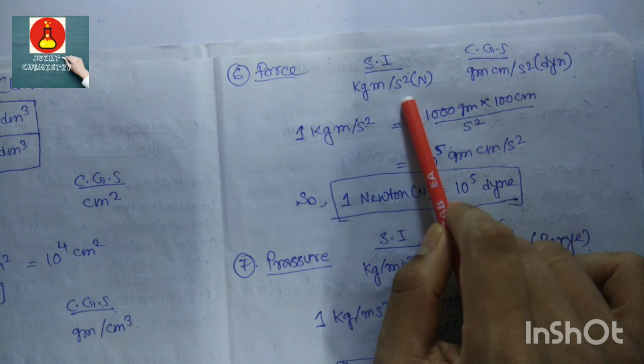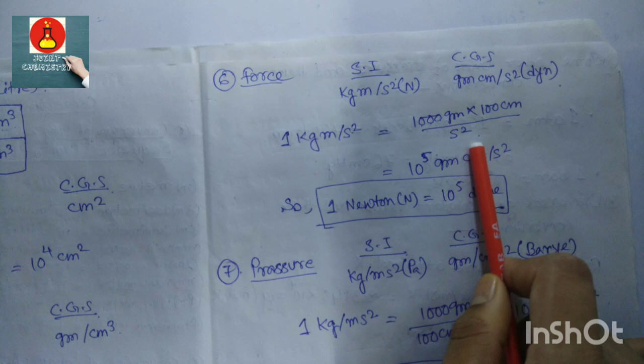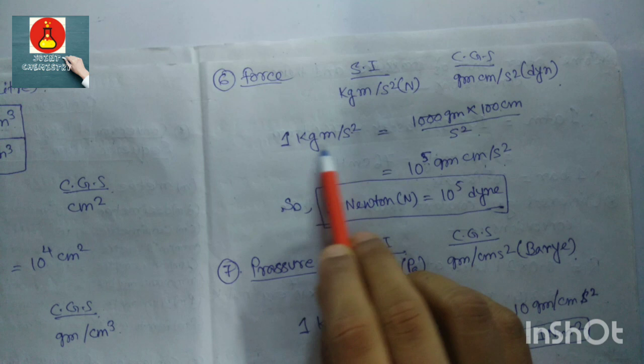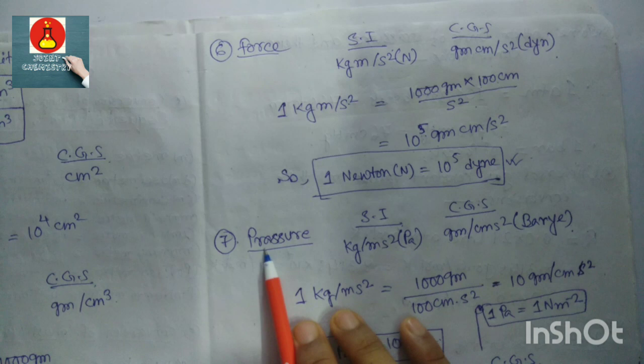Force: SI unit is kg·m/s² (Newton) and CGS unit is g·cm/s² (dyne). One Newton equals 1000 g times 100 cm divided by s², which equals 10⁵ g·cm/s². So 1 Newton equals 10⁵ dynes — this is an important relation.